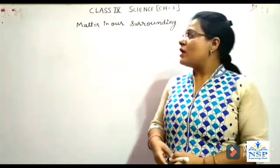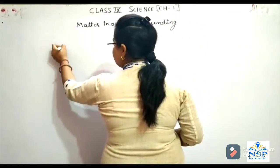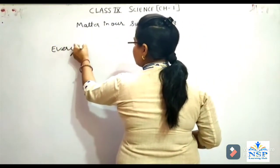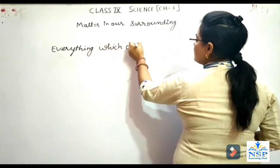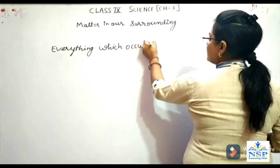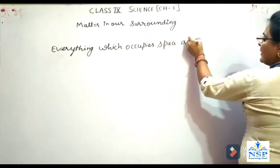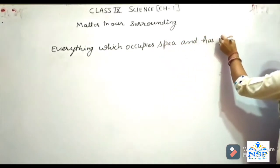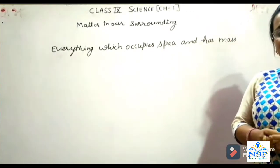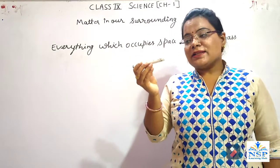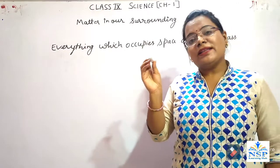First of all we have to know what is matter. Everything which occupies space and has mass is called matter. For example, this marker also has a mass as well as it occupies space in this room.